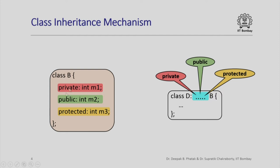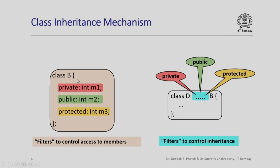We have seen these three keywords — private, public, and protected — which can appear within a class definition to represent access control of individual members. The same three keywords can also be used to denote how derivation of a derived class happens from the base class. When placed in front of data member or member function declarations, these keywords act as filters controlling access to individual members. When they appear in the derivation specification, they act as filters controlling the inheritance mechanism.